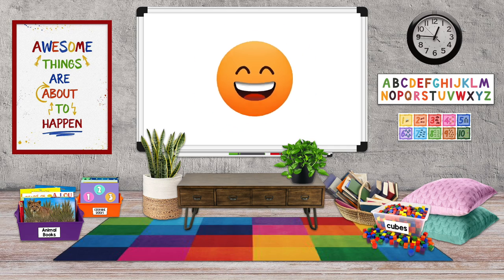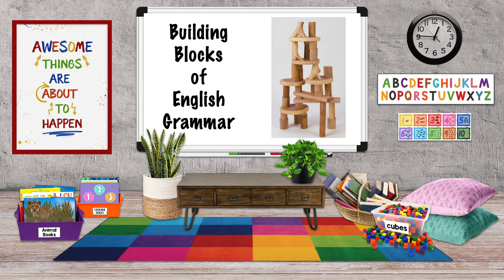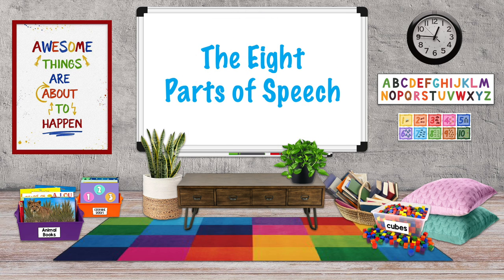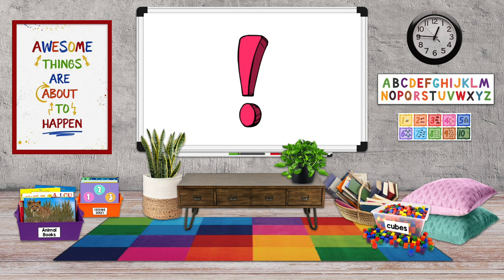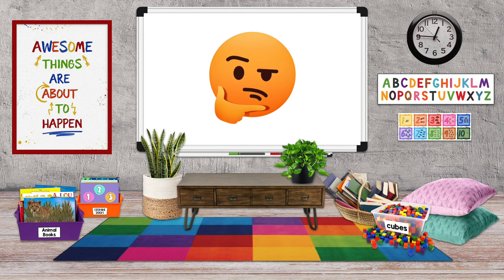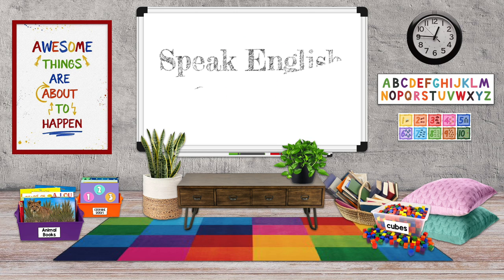Hello everybody and welcome back to Mr. Tom Teaches. Today we'll look at the building blocks of English grammar: the eight parts of speech. Practically every word in English falls under one of these categories. We don't have to understand these parts of speech to speak fluent English, but if we understand how English works, we can learn to speak it correctly.